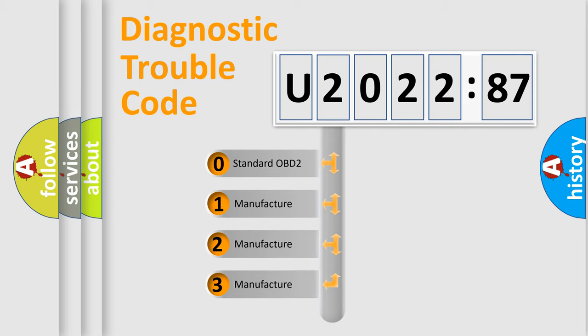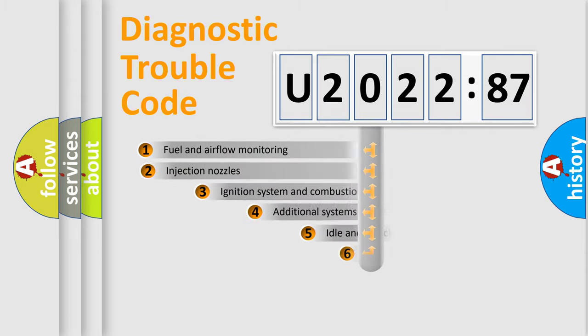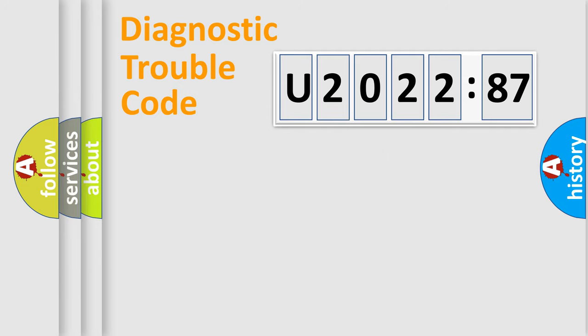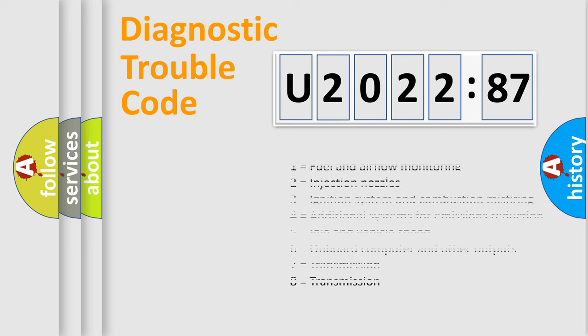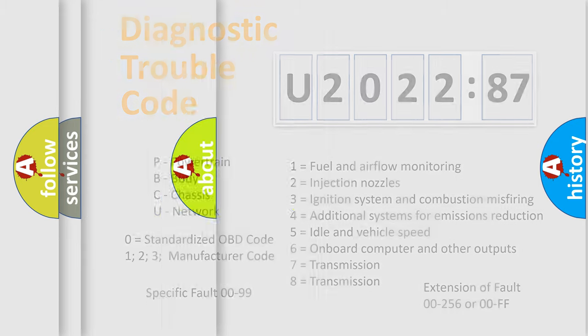If the second character is expressed as zero, it is a standardized error. In the case of numbers 1, 2, 3, it is a manufacturer-specific error. The third character specifies a subset of errors. The distribution shown is valid only for the standardized DTC code. Only the last two characters define the specific fault of the group. The add-on to the error code serves to specify the status in more detail. Let's not forget that such a division is valid only if the second character code is expressed by the number zero.